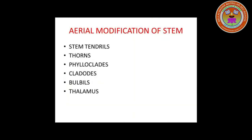Aerial modification of stem. The stems are modified into aerial form to perform important functions such as climbing, food storage, vegetative propagation, and protection. The stem modifications are as follows: stem tendrils, thorns, phylloclades, cladodes, bulbils, and thalamus.